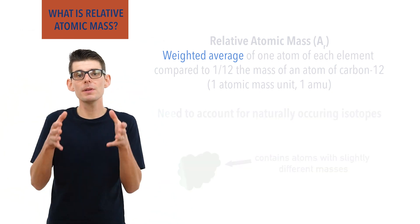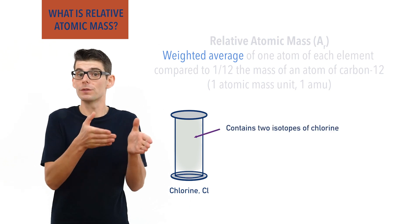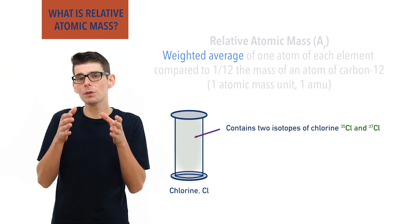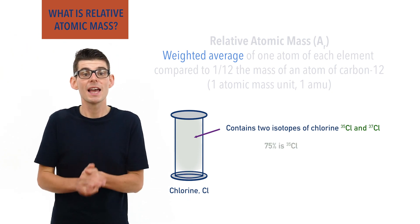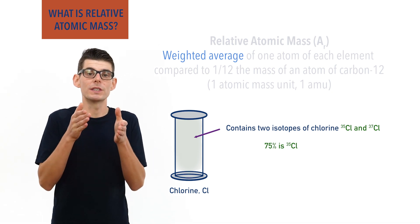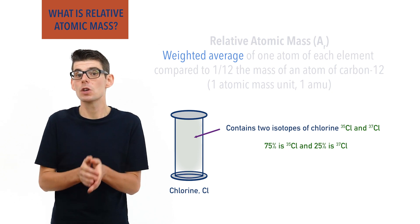For example, a sample of chlorine will always contain atoms of two isotopes, chlorine 35 and chlorine 37. The amount of chlorine 35 isotope in the sample will be 75% and the amount of chlorine 37 isotope in the sample will be 25%. These are sometimes referred to as percentage abundances.